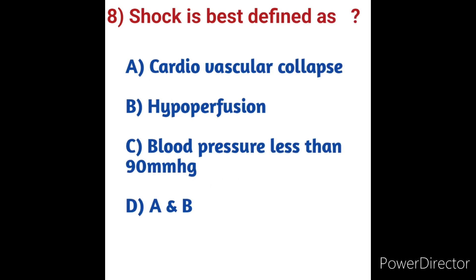Question number eight: Shock is best defined as? Options: A) Cardiovascular collapse, B) Hypoperfusion, C) Blood pressure less than 90 mmHg, D) A and B. Shock means poor perfusion — the body is not able to get enough oxygen-carrying blood to vital organs. Types include hypovolemic, cardiogenic, obstructive, and distributive shock. Distributive shock (septic shock) is the most common, with a mortality rate of 40–50%. Shock is defined as inadequate tissue perfusion, also referred to as hypoperfusion. Option B is the correct answer.